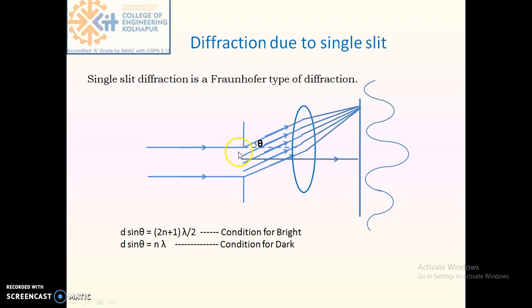Diffracted rays along this direction as well as along this direction are present, and therefore this first order principal maximum is observed. The equation for single slit diffraction is d sin θ = (2n+1)λ/2 for the condition for bright. In this equation, d is the slit width, θ is the angle of diffraction, and n is the order of diffraction. d sin θ = nλ is the condition for dark. In both equations, d sin θ is the path difference between the parallel diffracted rays.